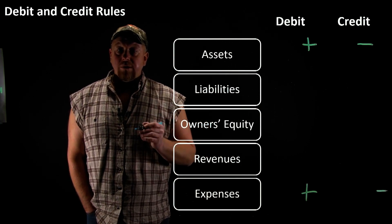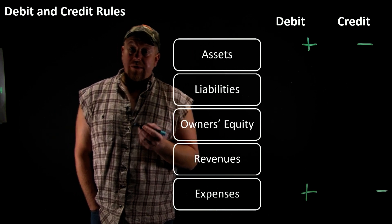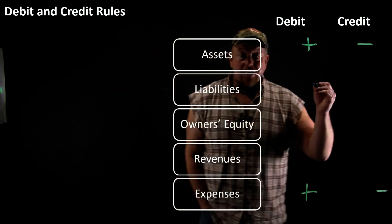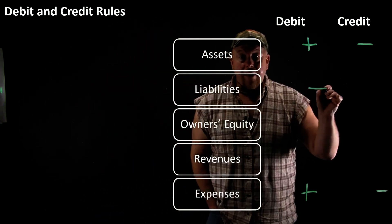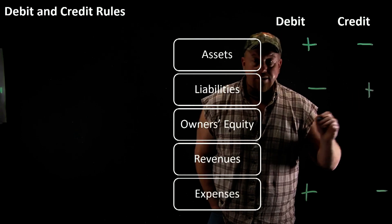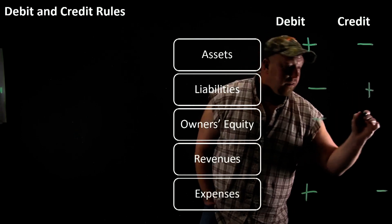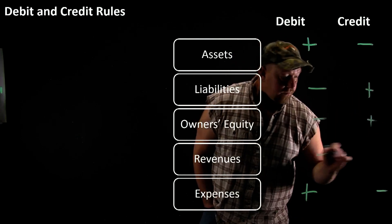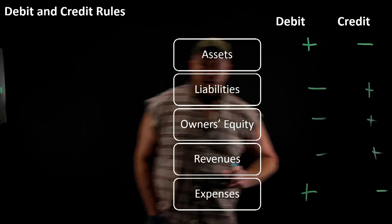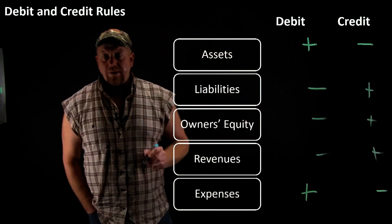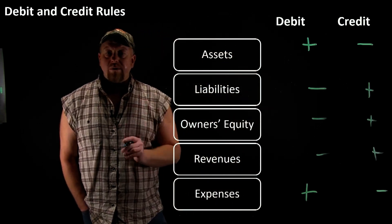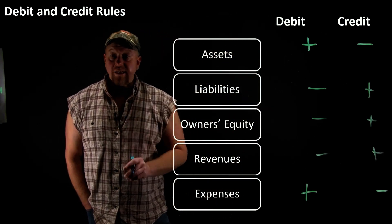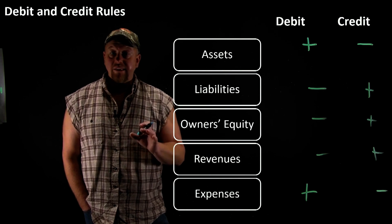Now say you got a truck payment — them liabilities — that can be exactly opposite of the assets. Same goes for owner's equity and revenues: liabilities, owner's equity, revenues are all exactly opposite of the assets and the expenses.